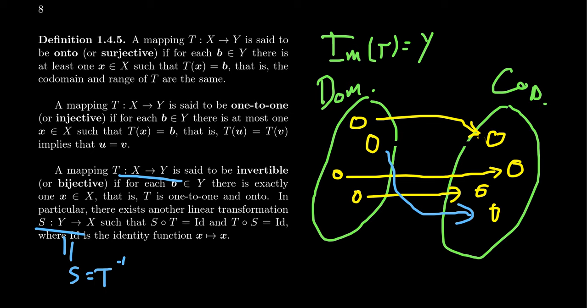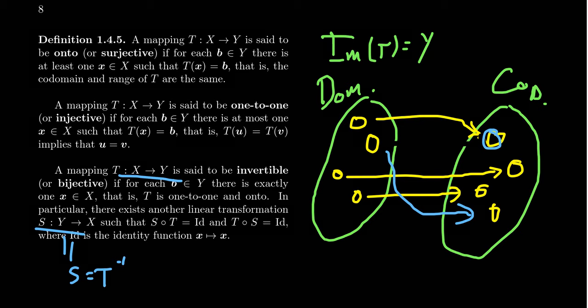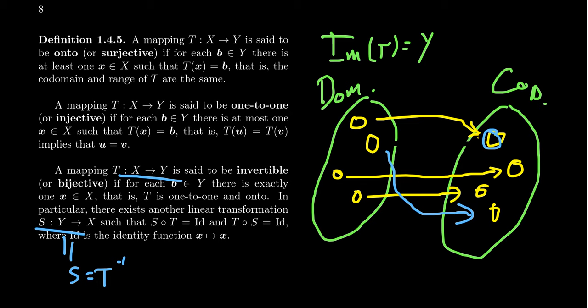A bijective map means that everyone gets mapped onto and there's a one-to-one correspondence. With a bijective map, every vector in the codomain gets hit once and only once. To be one-to-one means every vector gets hit at most once, and to be surjective — onto — means every vector is hit at least once. So when you put the two together and get bijective, that means every vector is hit exactly once.